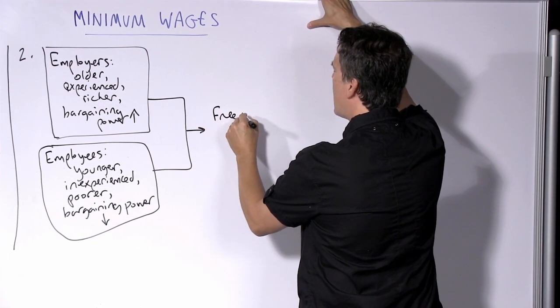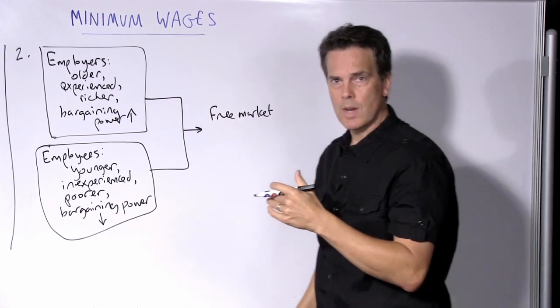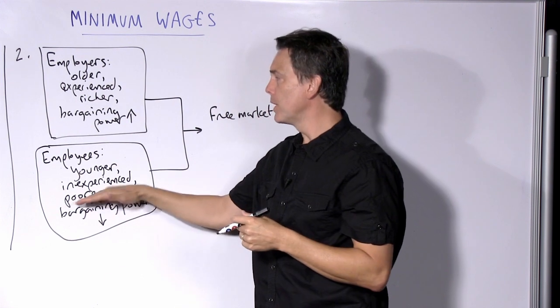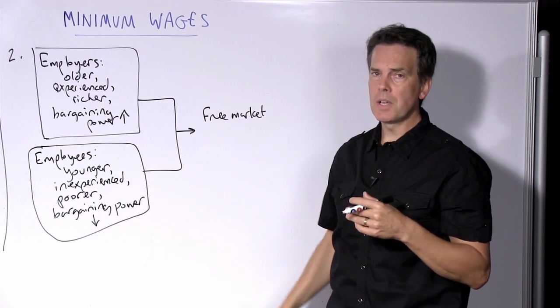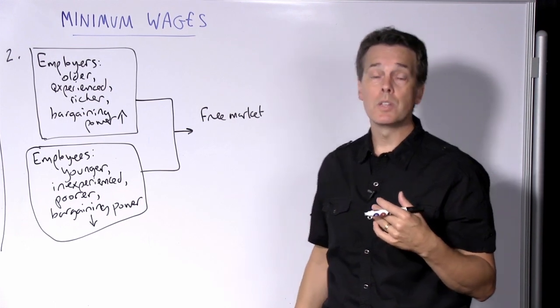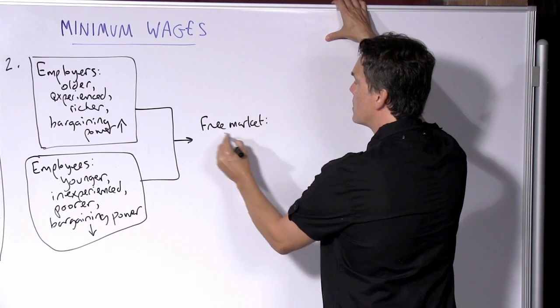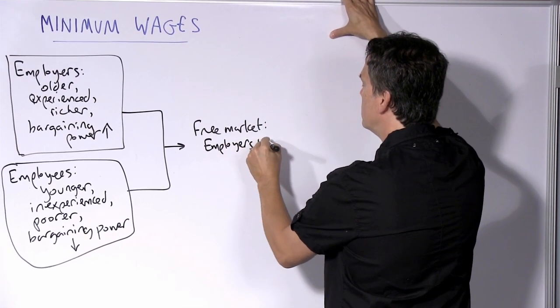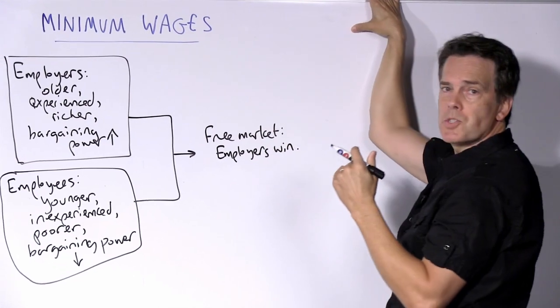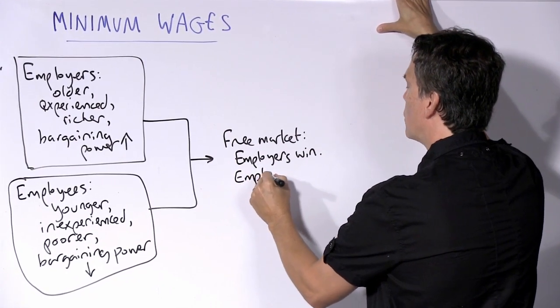What is going to happen is that the employers are going to gain in the transaction. They will strike deals with employees that are to their benefit, but the employees are much less likely to be able to negotiate what is to their advantage or what is to their interest. So in a free market, the argument is that the employers will win. They'll be able to set very low market prices and then by contrast, employees are going to lose.